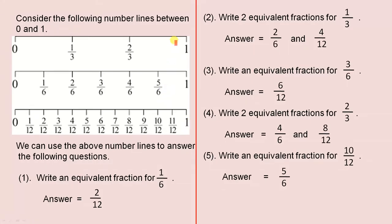Consider the following number lines between 0 and 1 — there are three of them. We can use these number lines to answer the following questions. Write an equivalent fraction for 1 over 6: there is 1 over 6, and it lines up with 2 over 12, so the answer is 2 over 12. Write two equivalent fractions for 1 over 3: there is 1 over 3; it lines up with 2 over 6 and 4 over 12, so those are the answers.